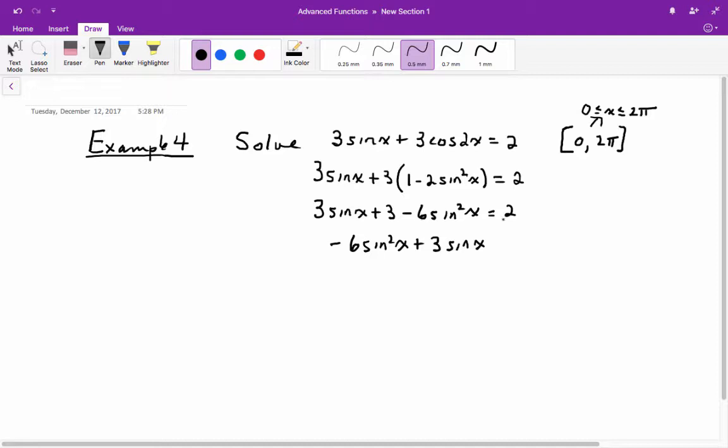When you bring over the 2 onto the left side, it's going to be subtracted, so we end up with plus 1 equals 0. You may want to multiply through everything by negative 1 to get a positive leading coefficient, which would be 6 sine squared x minus 3 sine x minus 1 equals 0.